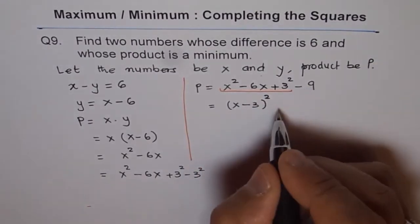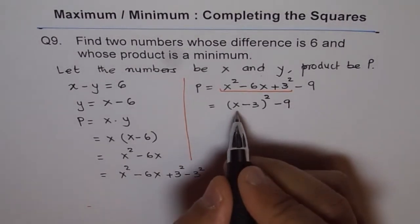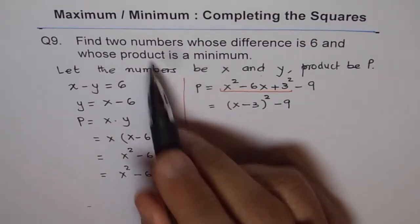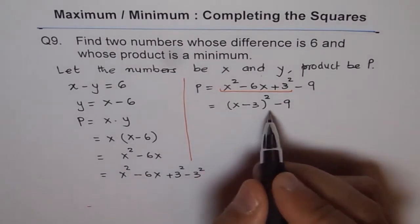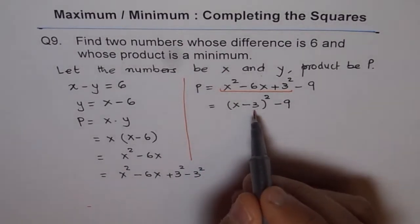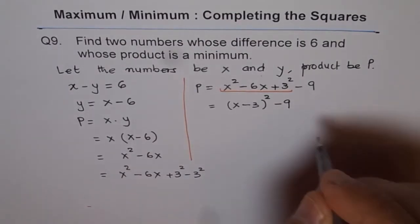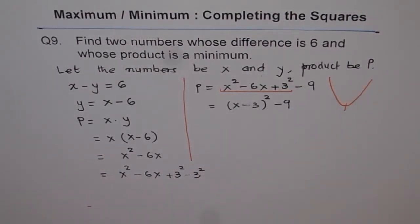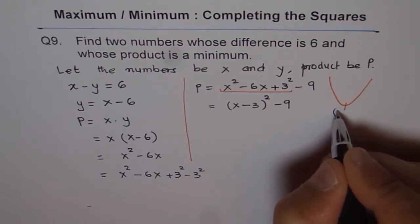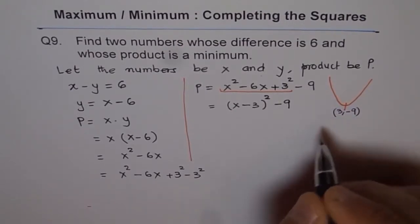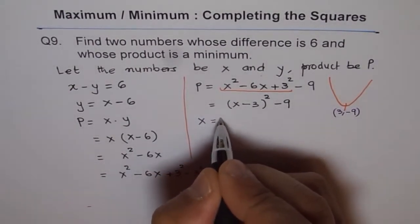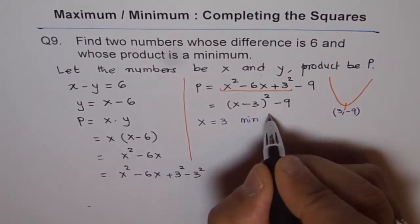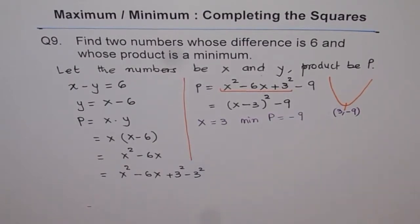Now that gives us the value of x for which we'll have a minimum product. Why minimum in this case? If you see, it's a parabola with a vertex at (3, -9) and is opening upwards. That point of the parabola is basically the vertex, which is at (3, -9). So at x equals three, we have minimum product P equals minus nine.